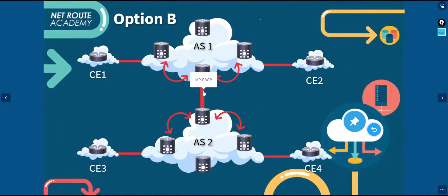We can choose Option B as it provides a single control plane from one edge to another autonomous system, as we become one domain only, and it requires a full label switch path from one edge to another.